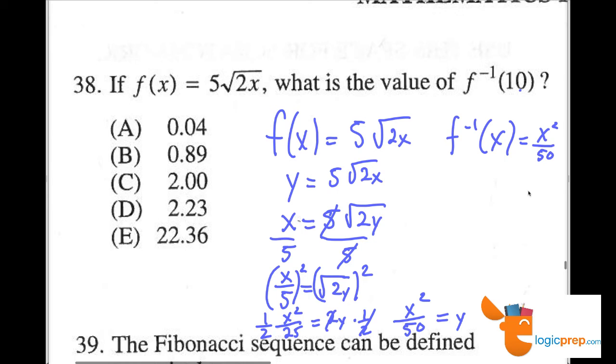Now we could plug in 10 here. We go ahead and take the inverse function of 10. And we have 10 squared over 50, which means that 10 squared is 100 over 50, which we know reduces to 2. So that makes the answer choice C.